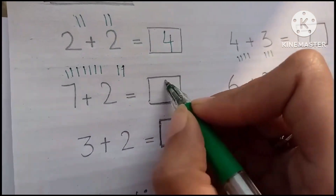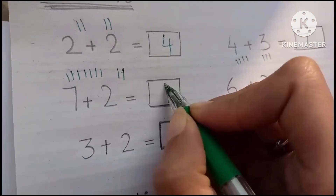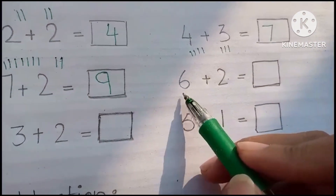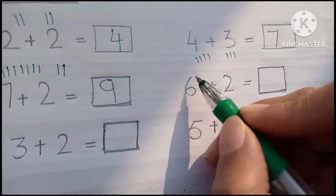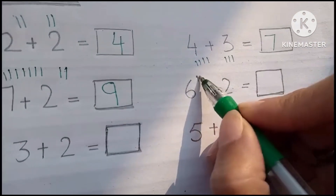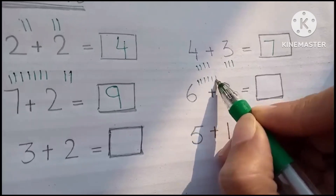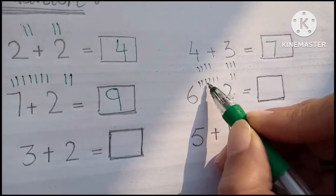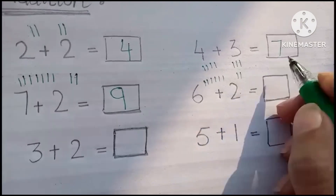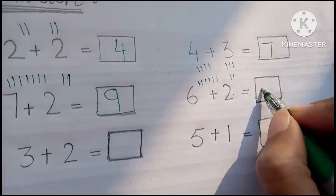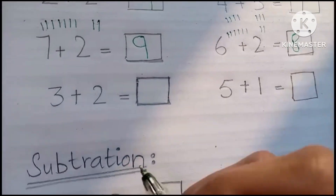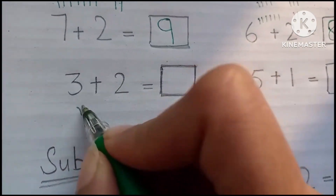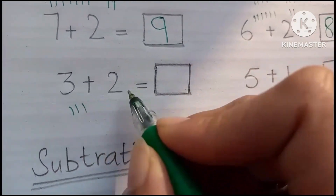7, 8, 9. 7 plus 2 is 9. 6 plus 2: 1, 2, 3, 4, 5, 6, 7, 8. 6 plus 2 is 8. 3 plus 2: 1, 2, 3 and 2...